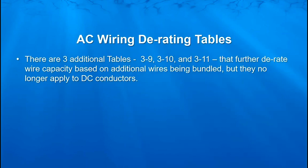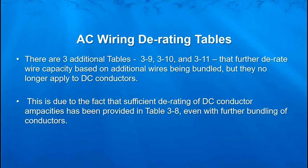There are three additional tables which you don't necessarily have to worry about, just to understand that they're there. They further derate the current-carrying capacity of AC wiring, but they no longer apply to DC conductors. It is felt that there is sufficient derating of our DC conductor ampacities through Table 3-8, which is for three current-carrying conductors, even if we add further wires to that bundle.